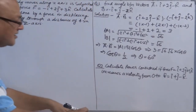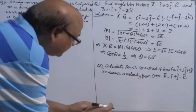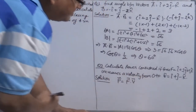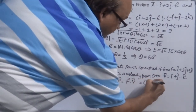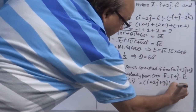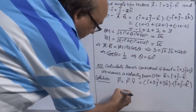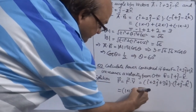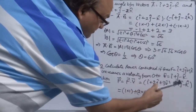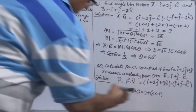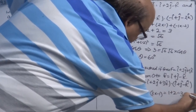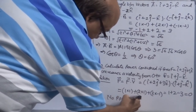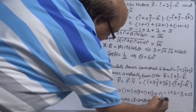Second question: calculate power. If force F = î + 2ĵ + 3k̂ and velocity V = î + ĵ − k̂, then power P = F·V. Taking only the matching unit vector products: 1×1 + 2×1 + 3×(−1) = 1 + 2 − 3 = 0. So no power is consumed in this process.